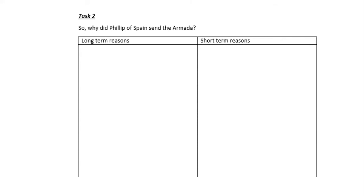At the start of that video clip, it mentioned the execution of Mary Queen of Scots, which swept across the Catholic parts of Europe and shocked people. The suggestion was that this was one of the reasons why Philip of Spain decided to send the Armada. The long-term reasons were to do with the Catholic versus Protestant conflict in Europe — he saw Elizabeth as the heretic Protestant ruler most in need of being removed so that Catholicism could be restored to England.